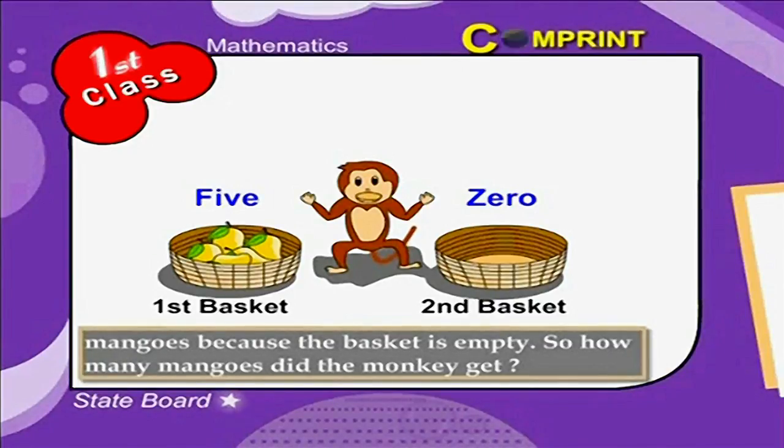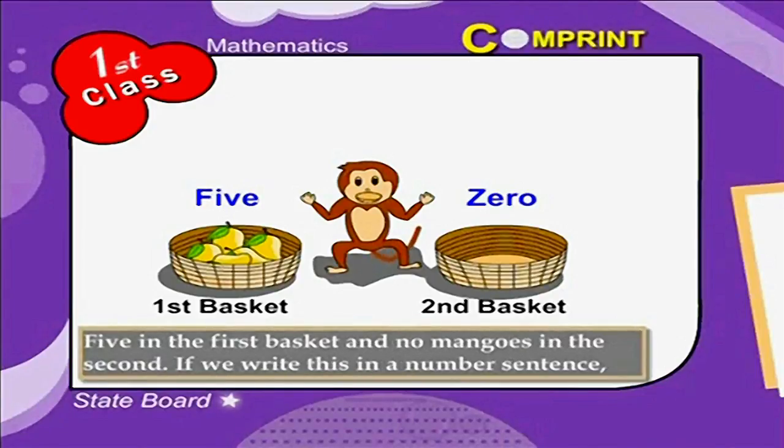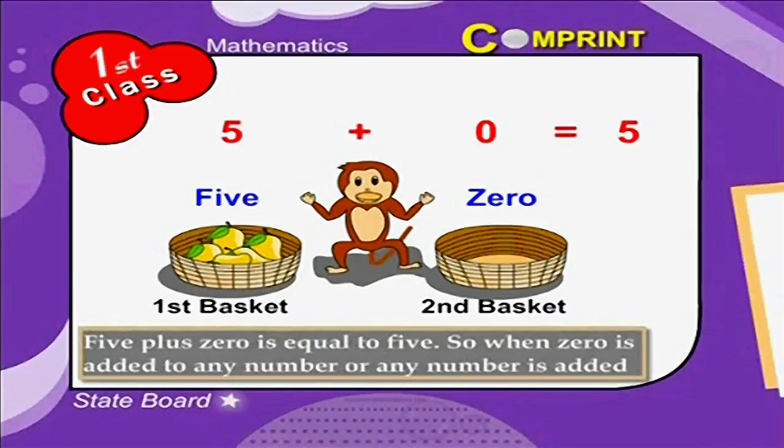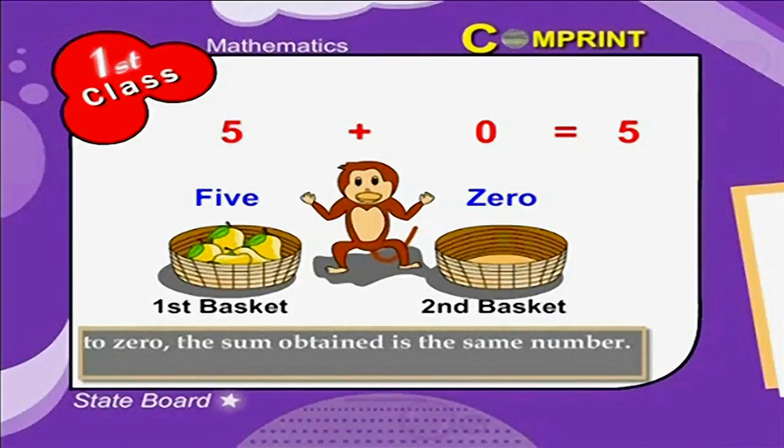So, how many mangoes did the monkey get? Five in the first basket and no mangoes in the second. If we write this in a number sentence, five plus zero is equal to five. So, when zero is added to any number or any number is added to zero, the sum obtained is the same number.